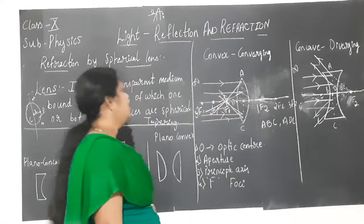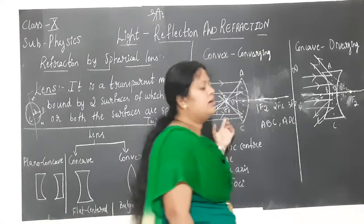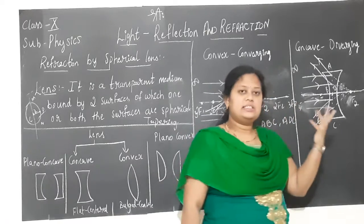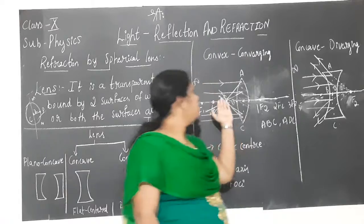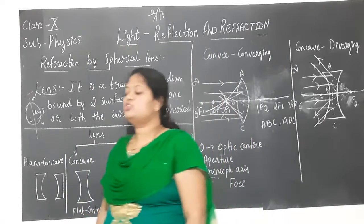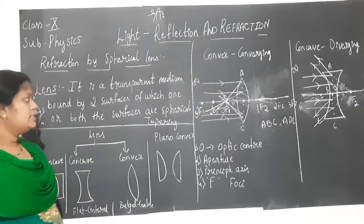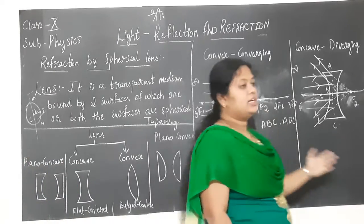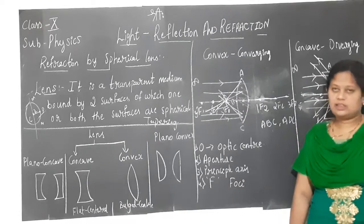In the case of a lens, since it is a transparent medium, no side is silvered or polished. So both the surfaces of the lens are available for the process of refraction. Hence, it has multiple principal focus points.